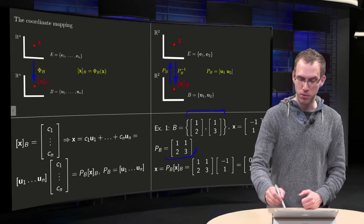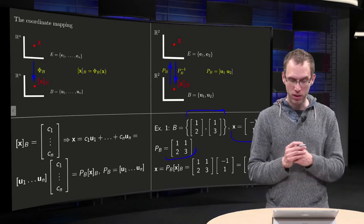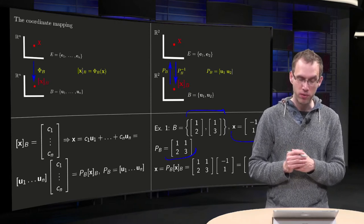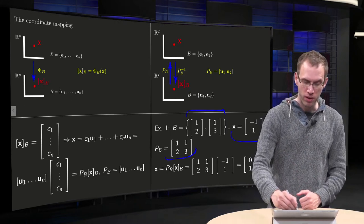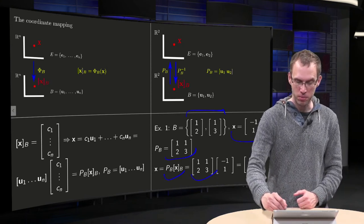And if we have, for example, some vector x equals minus 1, 1, how can we find our xB? Well, x will be Pb times xB equals our matrix times xB.